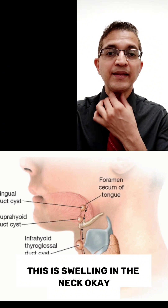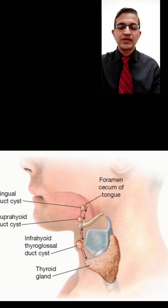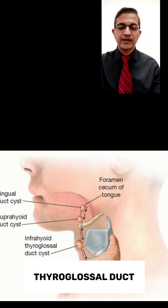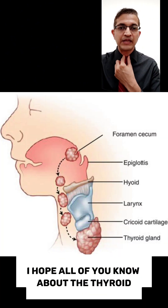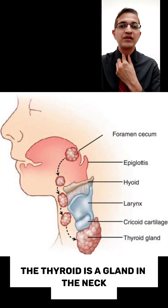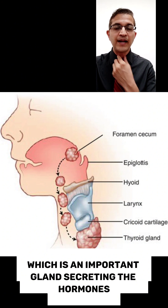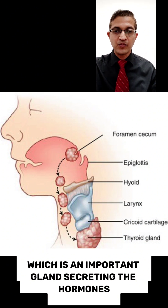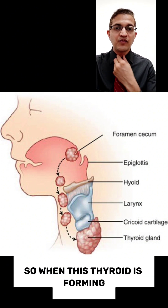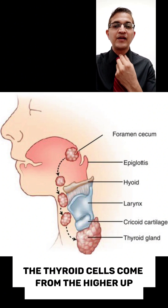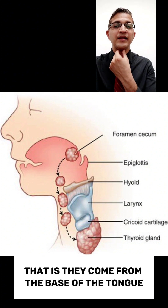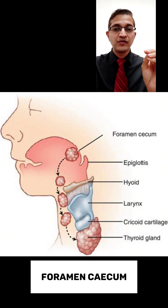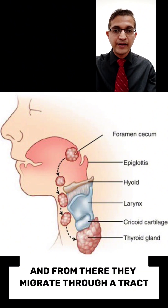This is a swelling in the neck. Now, the thyroid — which I hope all of you know about — is in the neck and is an important gland secreting hormones. When the thyroid is forming, the thyroid cells come from higher up, that is from the base of the tongue, the foramen cecum, and from there they migrate through a tract.